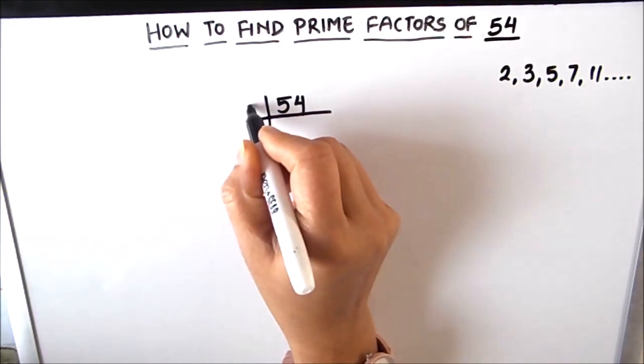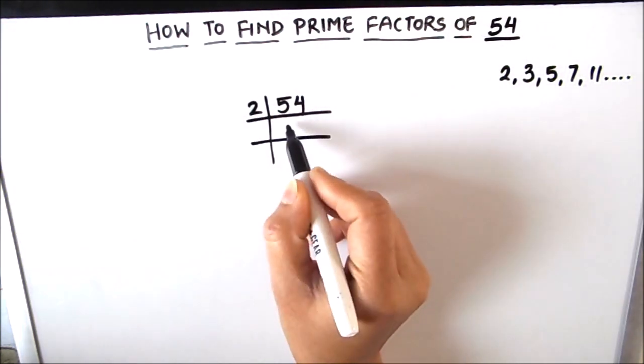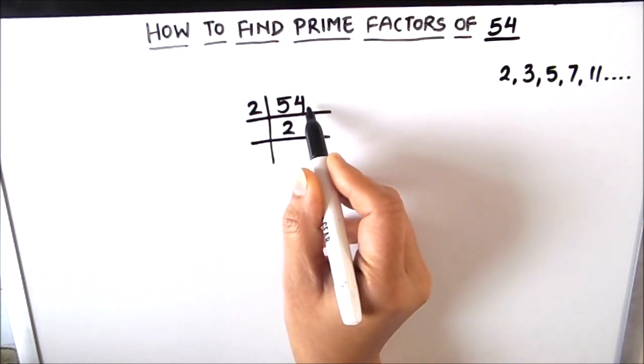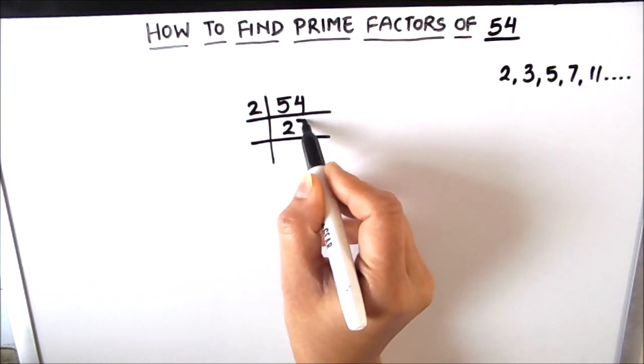As it is an even number, we can divide it by 2. 2 times 2 is 4, 1 is remainder. This becomes 14. 2 times 7 is 14.